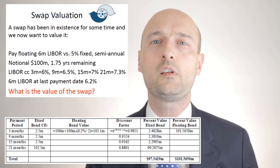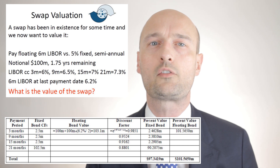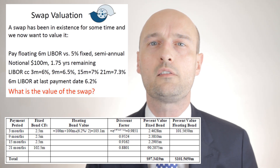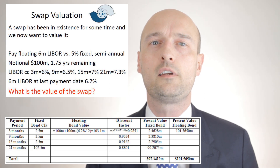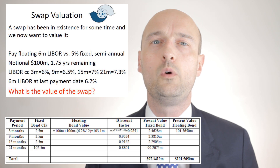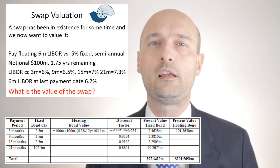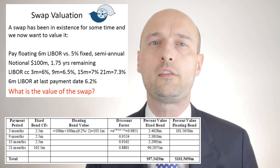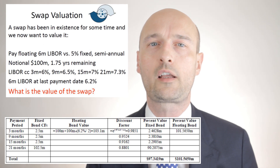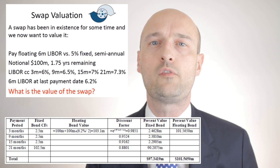Because we're valuing this as if it were a bond, the final payment is $102.5 million. We use the LIBOR rates from the question to present value those cash flows. The discount factor is e to the negative discount rate times the holding period — for the first payment at three months with a 6% rate, that is e^(−6% × 3/12), giving us 0.9851. We do the same calculation for each period, then multiply the discount factors by the $2.5 million cash flows and the final $102.5 million cash flow.